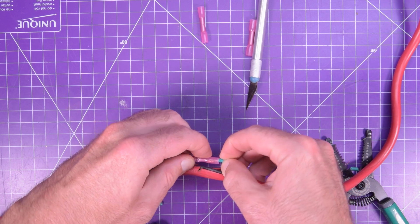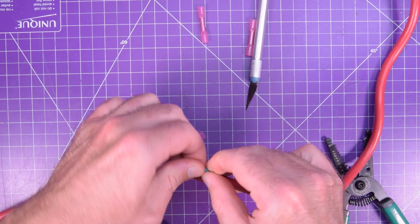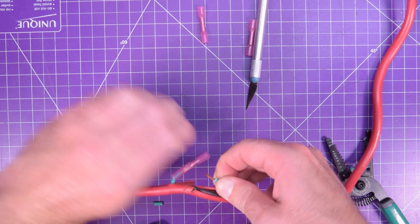Sometimes it's easier to feed both sides of the wire in first. Depends really how much is missing.